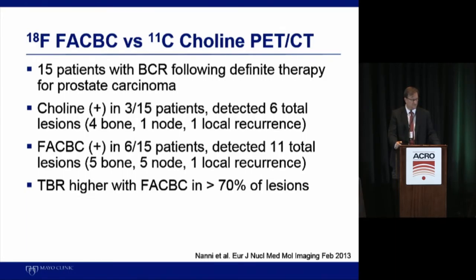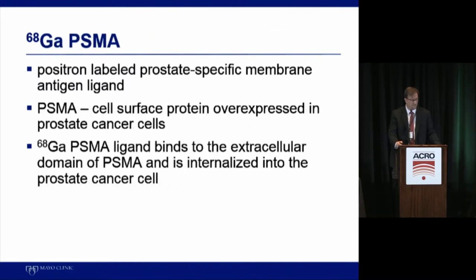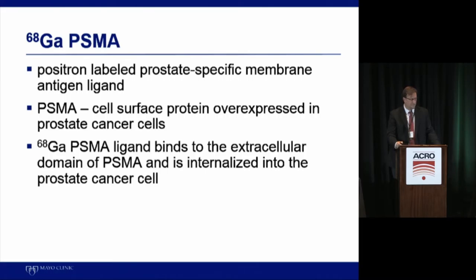Conclusions: MRI and C11 choline PET-CT are complementary in restaging biochemically recurrent prostate cancer. MRI is superior for local recurrence and facilitates localized salvage treatments. Choline PET is superior for lymph node metastasis, and both are equally excellent for bone metastasis. Regarding F18-FACBC PET-CT, a small study of 15 patients with biochemical relapse showed choline was positive in 3 of 15 patients whereas FACBC was positive in 6 of 15, with a higher tissue-to-blood ratio, suggesting FACBC may be even better than C11 choline.